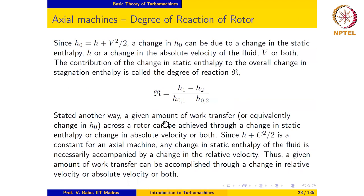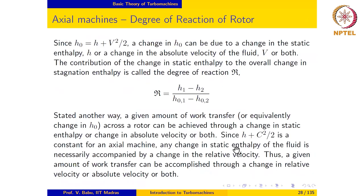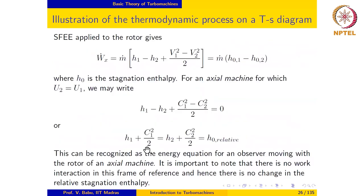It is clear from the SFE applied to the rotor that a given amount of work transfer can be accomplished either through a change in specific enthalpy or a change in specific kinetic energy or both. Now for an axial machine, since h plus c squared over 2 is a constant, any change in specific enthalpy necessarily leads to a change in relative velocity also. So a given amount of work transfer can be accomplished through a change in relative velocity or absolute velocity or both — that is the key insight from the SFE applied to the rotor and the definition of the degree of reaction.